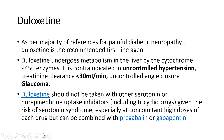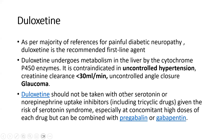A second important contraindication for duloxetine is renal impairment where creatinine clearance or eGFR is less than 30, and it is also contraindicated in uncontrolled angle-closure glaucoma. Duloxetine should not be combined with other serotonin or norepinephrine reuptake inhibitors, including tricyclic drugs, given the risk of serotonin syndrome — especially at concomitant high doses. However, duloxetine can be safely combined with pregabalin or gabapentin.